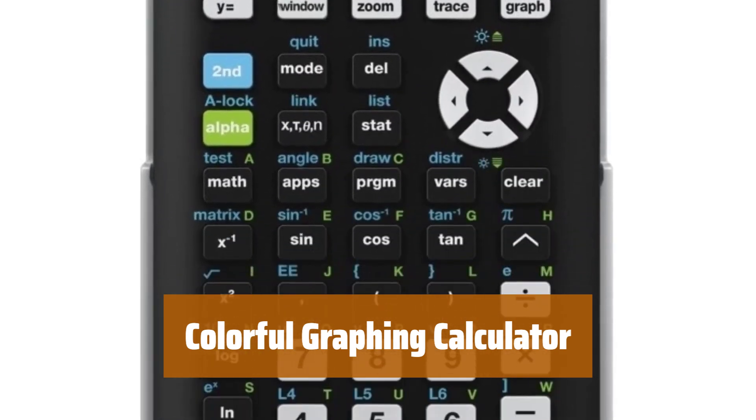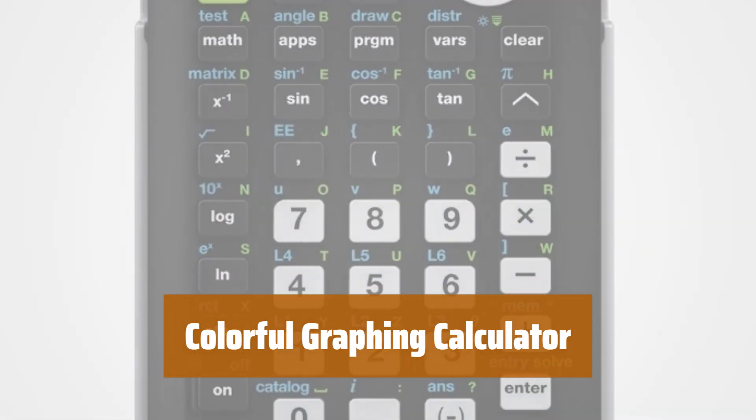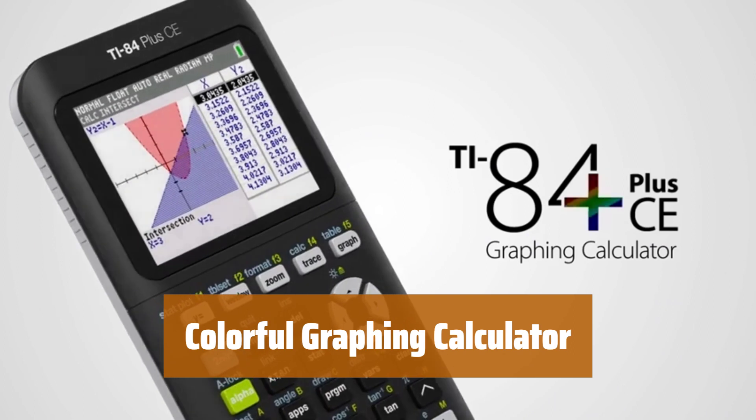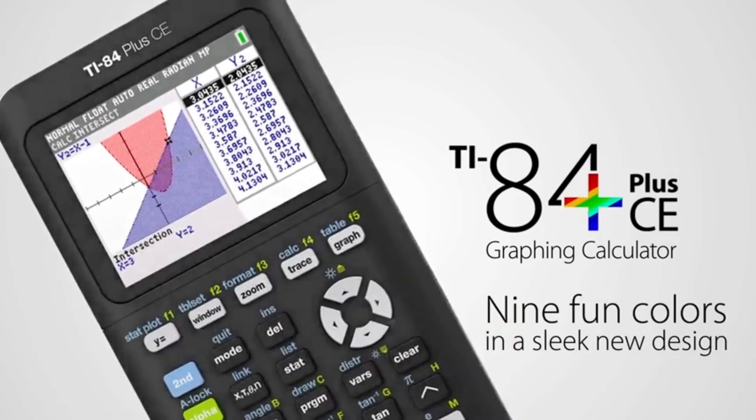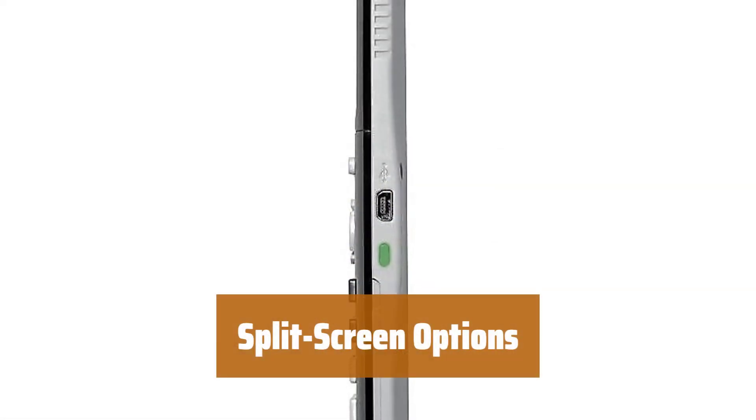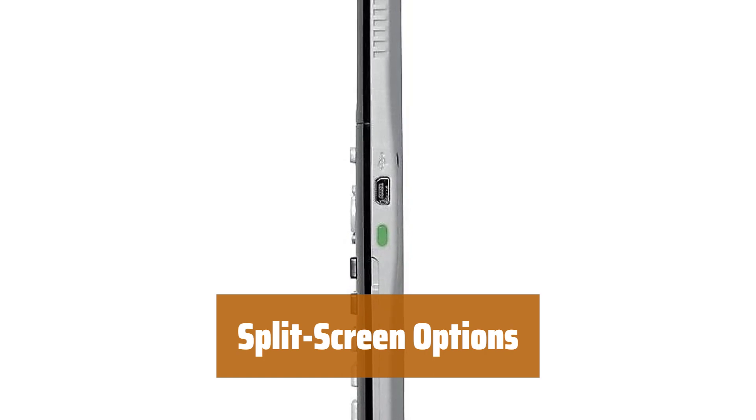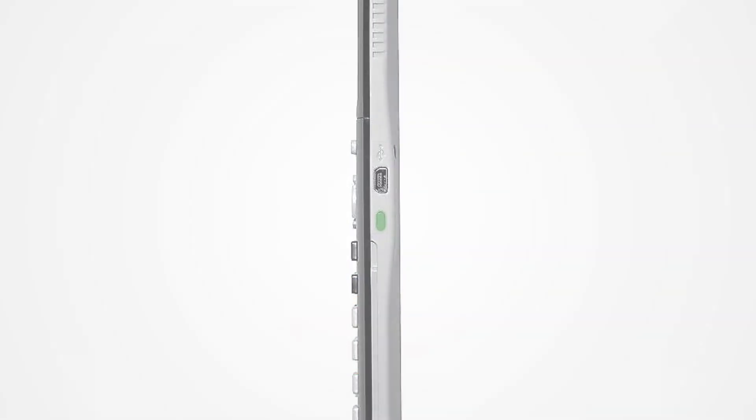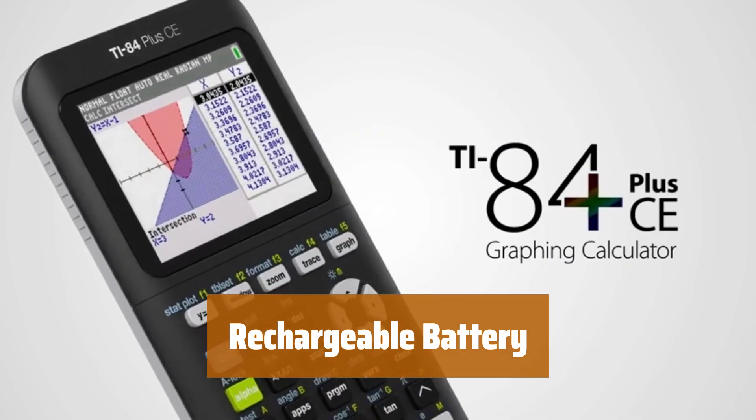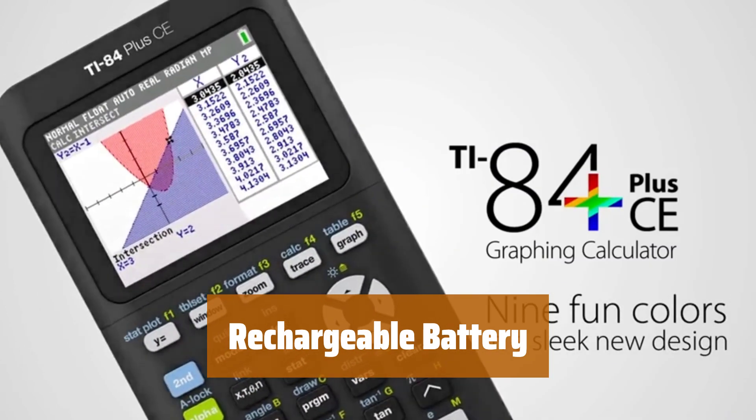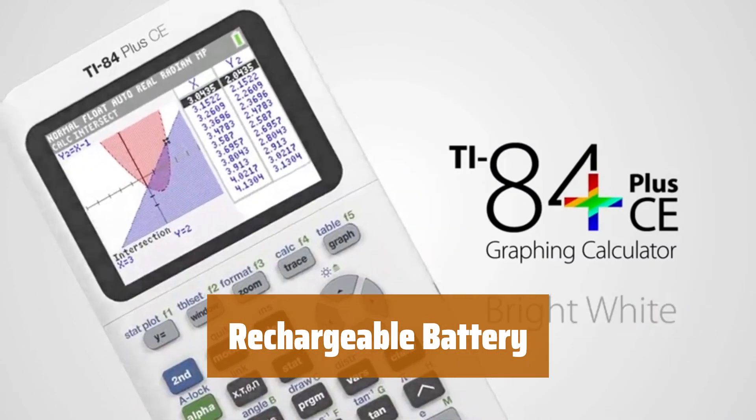Number 5: With a high-resolution, full-color backlit display, you can easily see your graphs and calculations even in low light. You can choose between horizontal and vertical split-screen options for a customizable viewing experience. The calculator comes with a rechargeable battery, so you can use it wherever you go without worrying about running out of power.